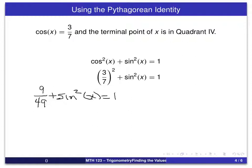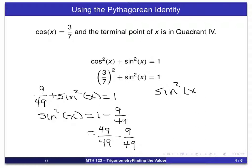And again, now what we want to do is isolate sine squared of x on one side of the equation. So what we will do is subtract that fraction, 9/49, from both sides of the equation. And we get that. And now of course what we want to do is combine that into a single fraction. And in particular what we will do is write the number 1 as 49/49. And of course we're subtracting 9/49.